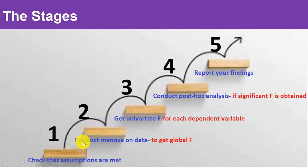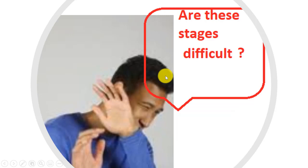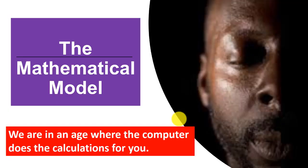There are five stages. Stage one is to check that the assumptions are met — if they are not, everything else is a waste of time. When you have scaled this hurdle, you conduct the MANOVA on the data. MANOVA is like strict immigration — it won't let you through if you don't meet the requirements, and if you force through, you will get very wrong results.